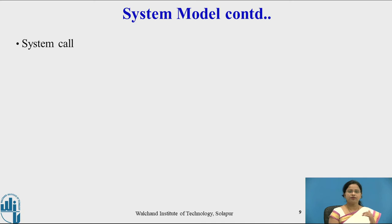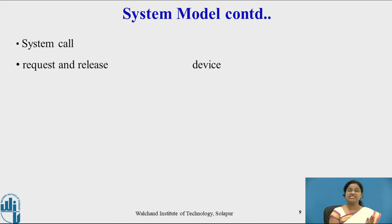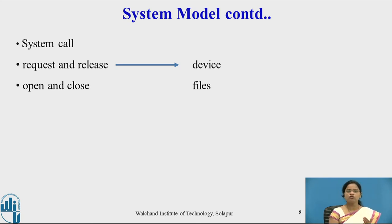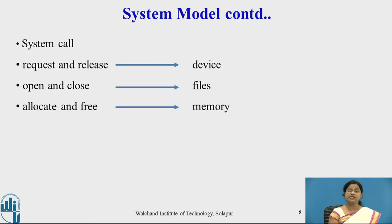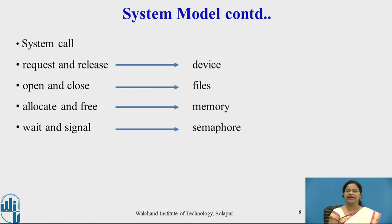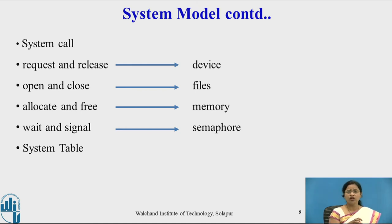System calls are predefined functions in the operating system used by processes whenever needed. For a device, the system calls are request and release. For files, we use open and close. For memory, we use alloc and free. For semaphores, we have wait and signal. These system calls are present as a library in the operating system and are invoked whenever a process requests a resource.